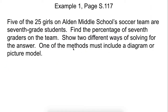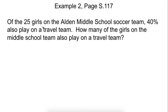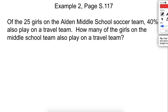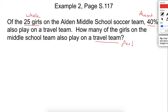Let's go ahead and look at another one. Of the twenty-five girls on the Alden team, forty percent also play on the travel team. How many girls on the middle school team also play on the travel team? So we need to find out what this forty percent is. In this case, we know the whole - twenty-five - and we know the percent. We need to find the part: how many girls on the middle school team also play on the travel team.